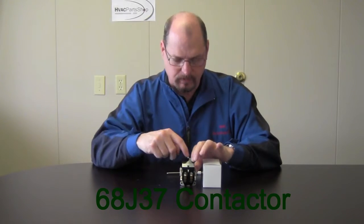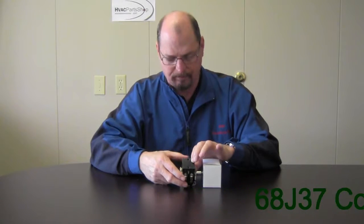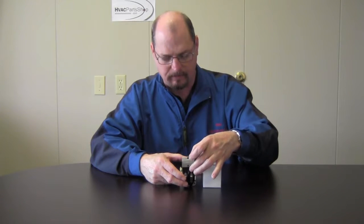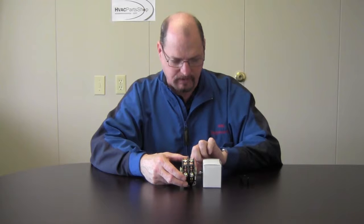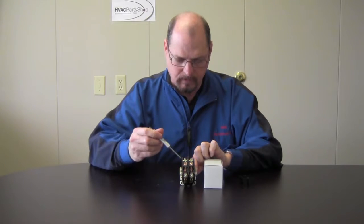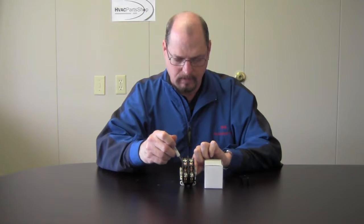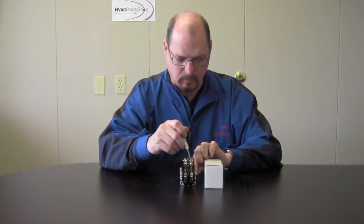I did remove the screws that hold the dust cover on. If we pull that off you'll see this is actually a double pull contactor. You got a pull over here on this side and then this side as well.